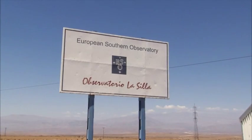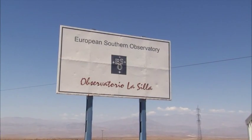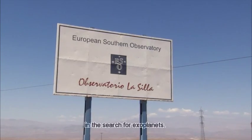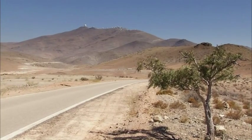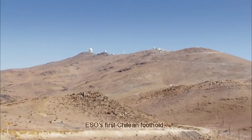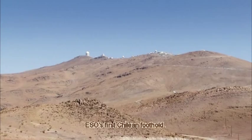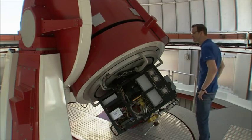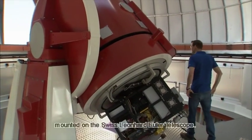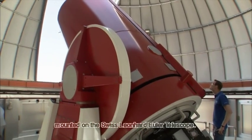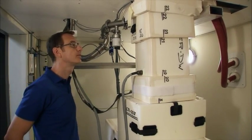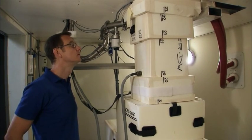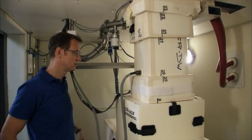The European Southern Observatory plays an important role in the search for exoplanets. Michel Mayor's team found hundreds of them from Cerro La Silla, ESO's first Chilean foothold. Here's the Coralie spectrograph, mounted on the Swiss Leonard Euler Telescope. It measures the tiny wobbles of stars caused by the gravity of orbiting planets.